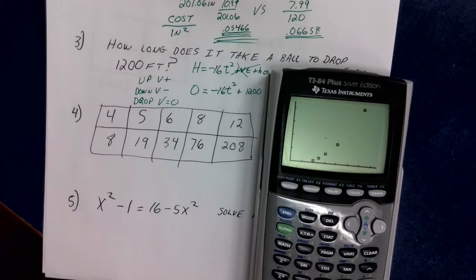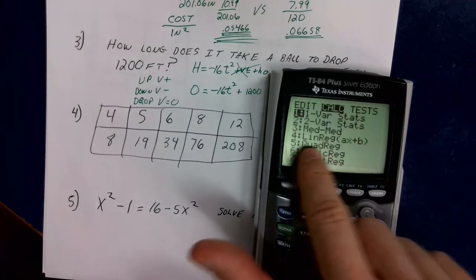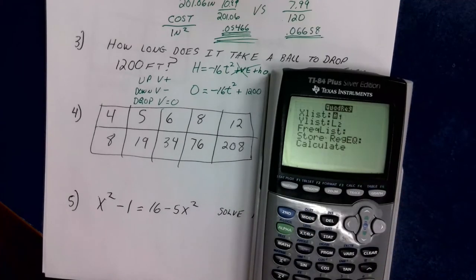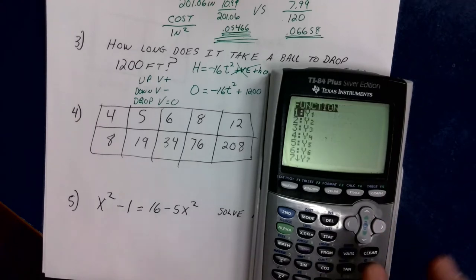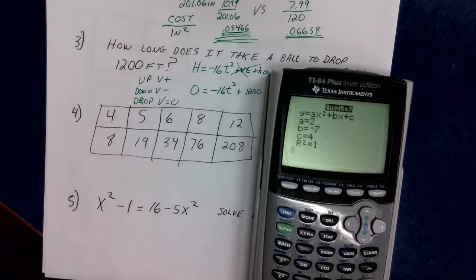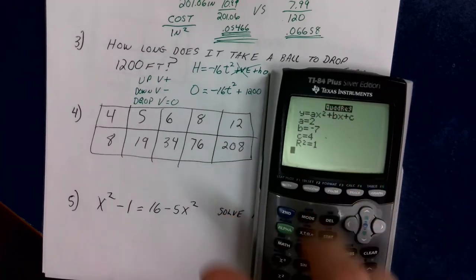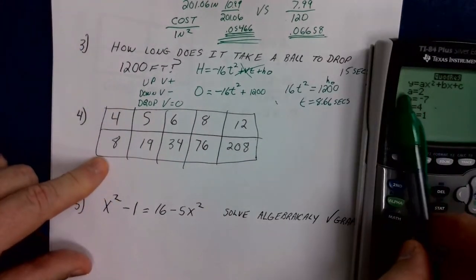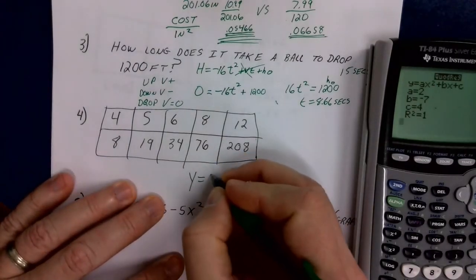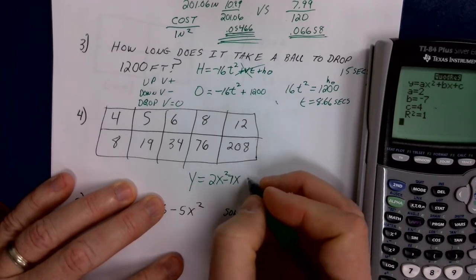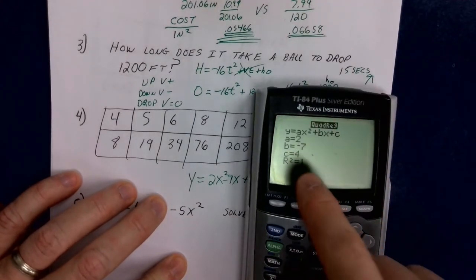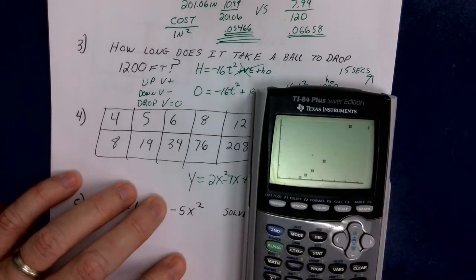So I know it's not a line — it's probably a curve. I'll go STAT → CALC and try the first most basic curve: a parabola. L1, L2, store in Y1: VARS, YVARS, FUNCTION, Y1, and calculate. The R-value is 1 — that's a 100% perfect fit. My equation is Y = 2x² − 7x + 4. When I hit graph, it nails every single one of those data points — went through every single one.